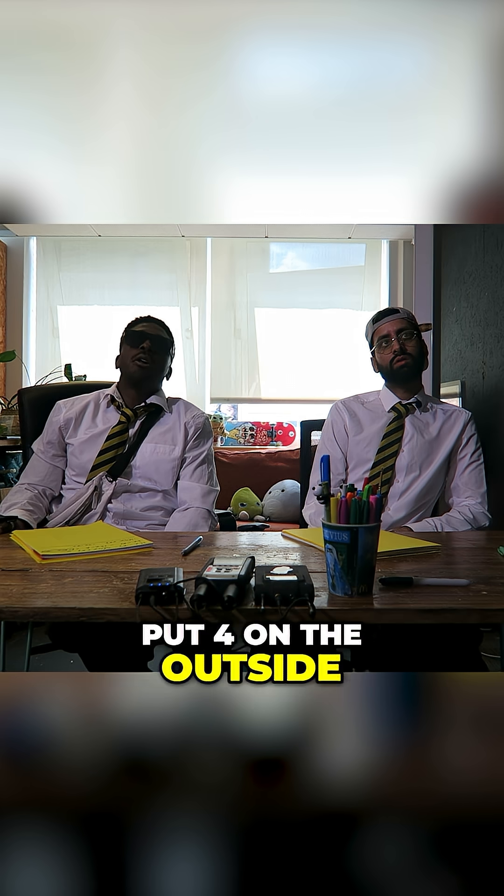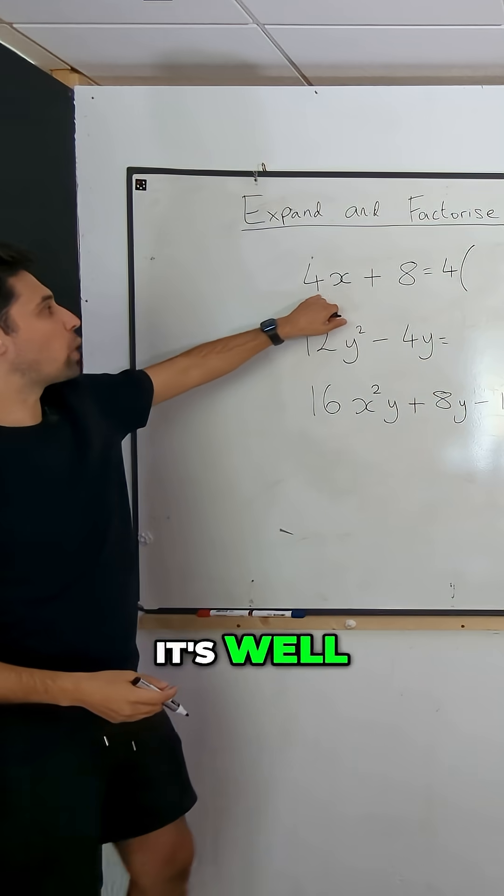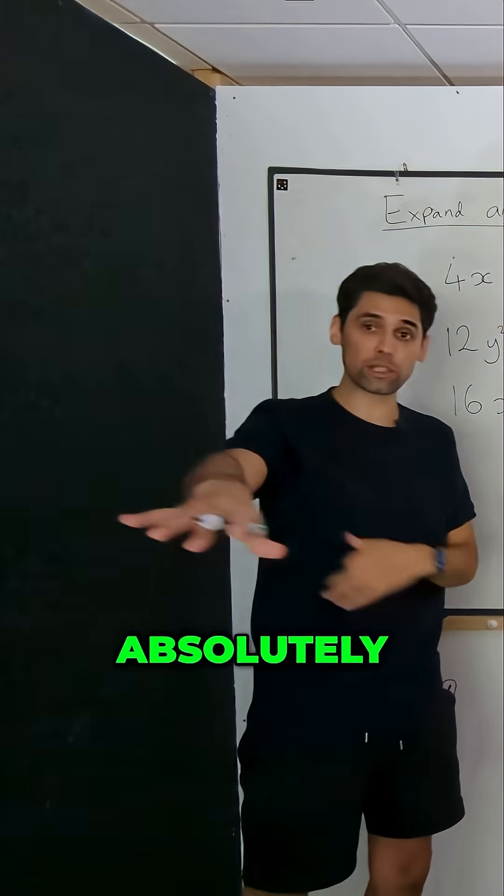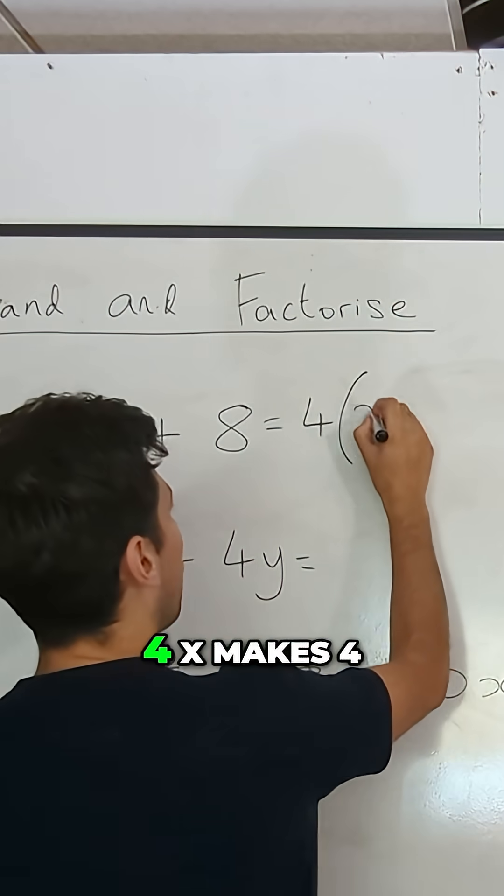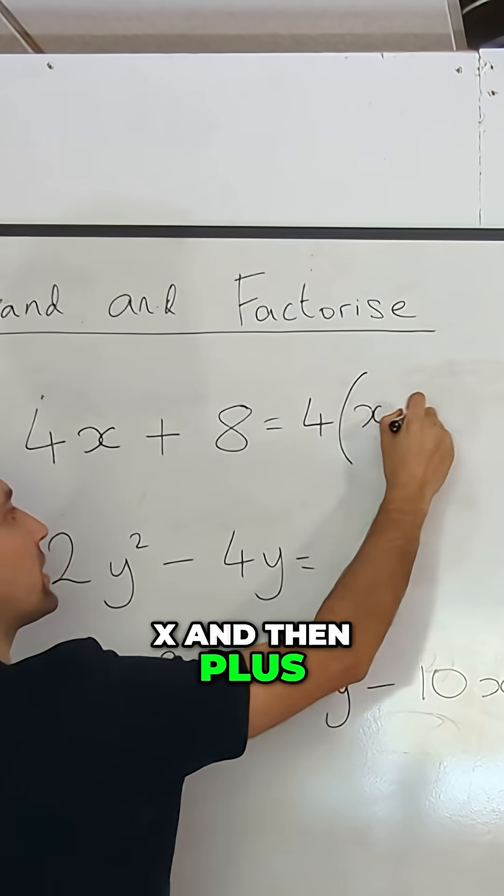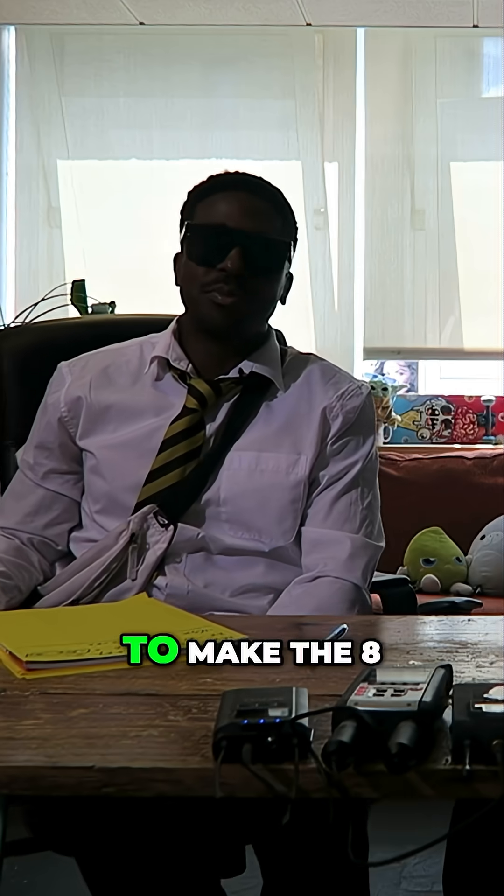So we're going to put four on the outside - that is the common factor. Then on the inside of the bracket, what would we have to put here so it multiplies to make 4x? One. So x, just x. One x, absolutely. But we don't need to write the one. 4x makes 4x. And then plus, because that's a plus. Yeah. What would need to go here? Two. Two, to make the eight.